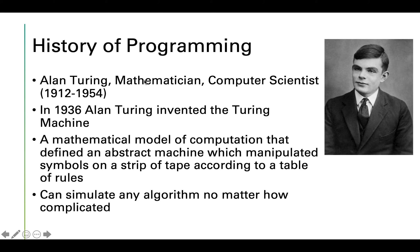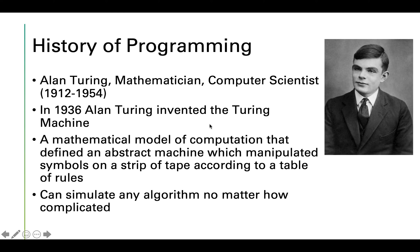Jumping forward, there's Alan Turing — a mathematician and computer scientist who lived from 1912 to 1954. In 1936 he invented the Turing machine, a mathematical model of computation that defined an abstract machine manipulating symbols on a strip of tape according to a table of rules. It can simulate any algorithm, no matter how complicated. Some people even replicated the Turing machine in Minecraft and in Magic the Gathering.